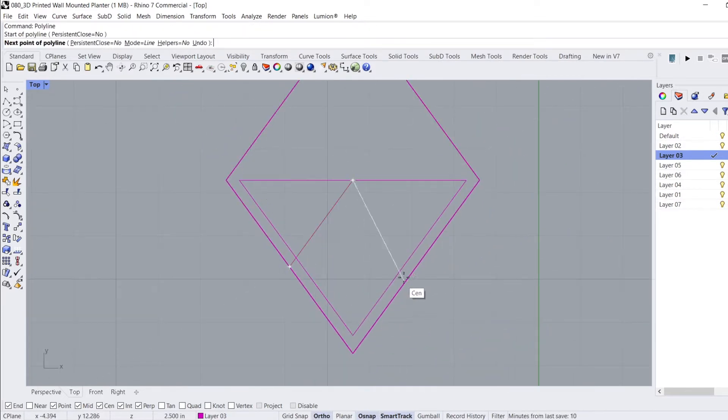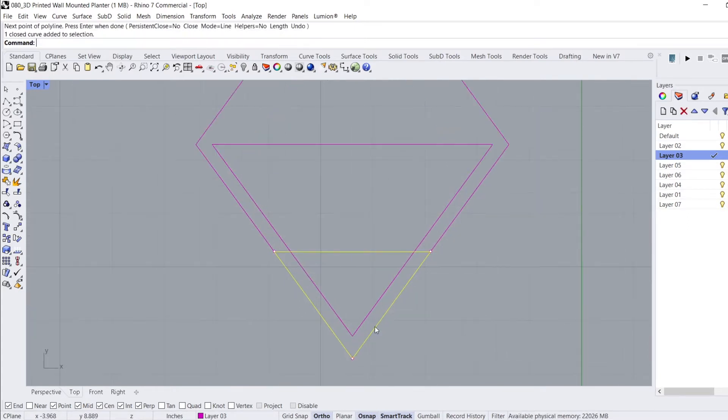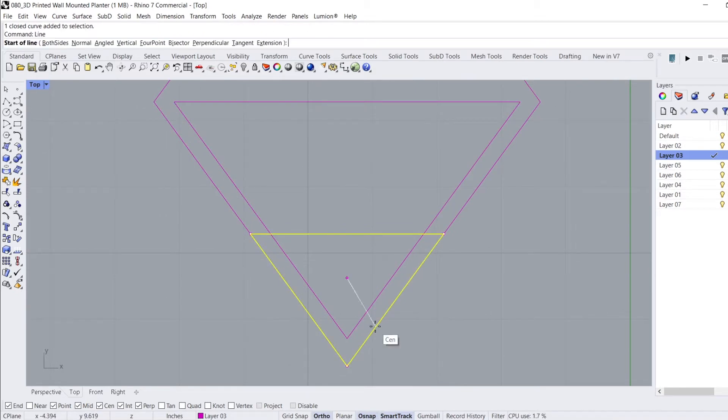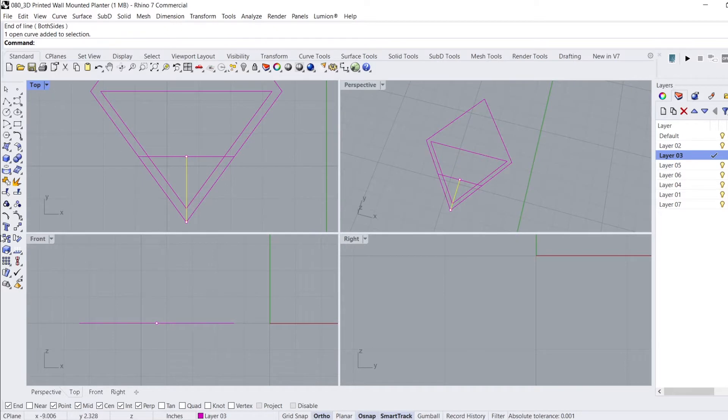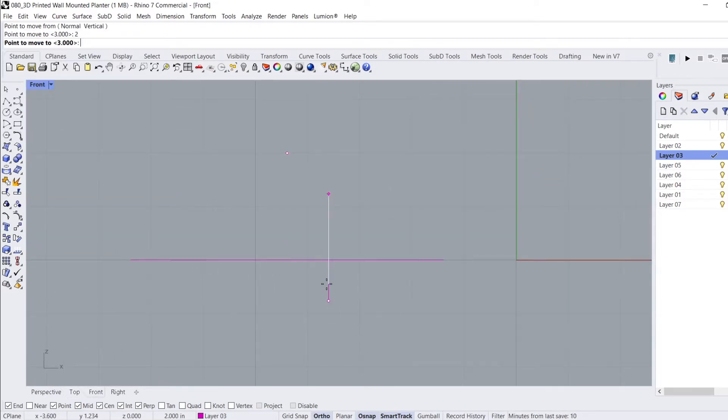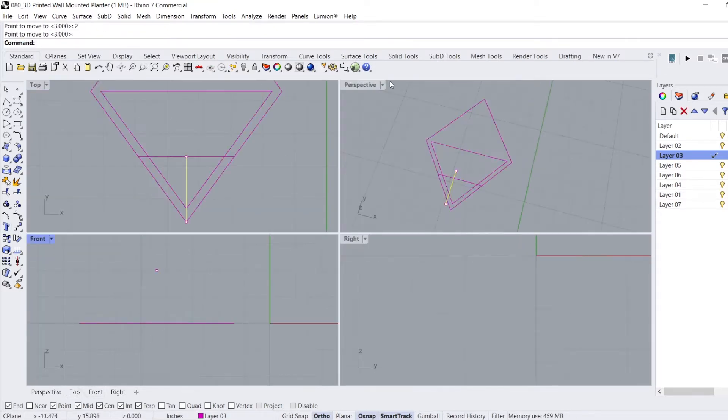This gives the planter enough space for the drip tray to fit directly under it. I follow the same series of commands to create another smaller triangle at the base of the diamond. This will be the drip tray that I mentioned before. The last part of the drawing process is to draw a line down the center of the smaller triangle to connect one point to the center of one line.